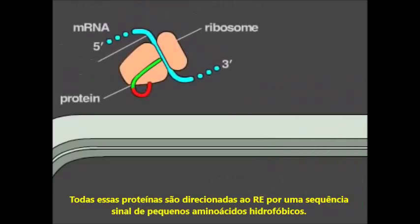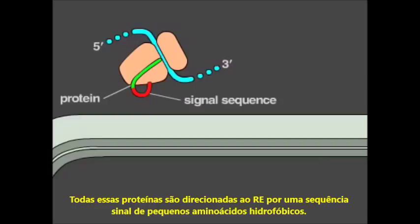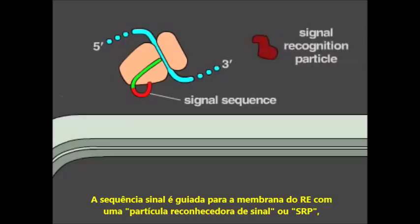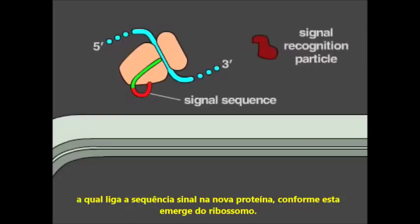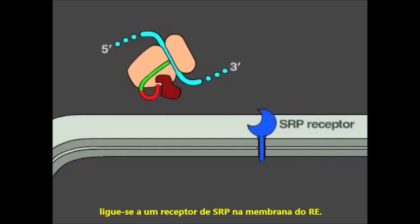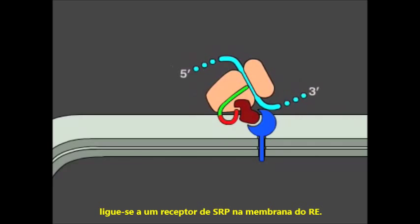All these proteins are directed to the ER by a signal sequence of small hydrophobic amino acids. The signal sequence is guided to the ER membrane with a signal recognition particle, or SRP, which binds the ER signal sequence in the new protein as it emerges from the ribosome. Protein synthesis then slows down until the SRP-ribosome complex binds to an SRP receptor in the ER membrane.